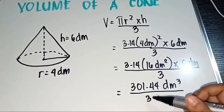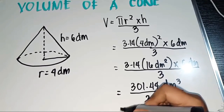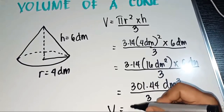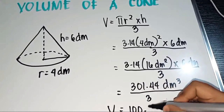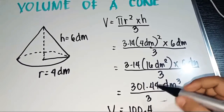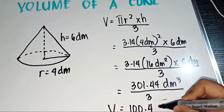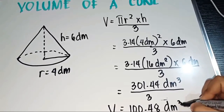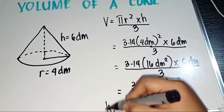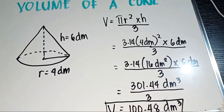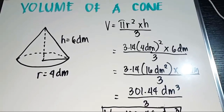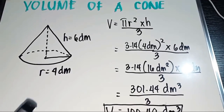Dividing 301.44 cubic decimeters by 3, we get the volume as 100.48 cubic decimeters. This is our final answer. That is how we solve for the volume of a cone.